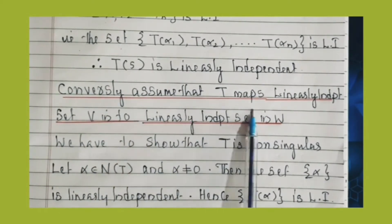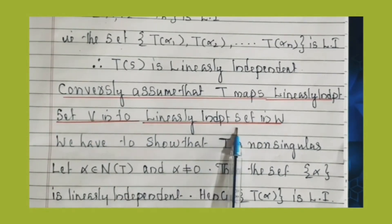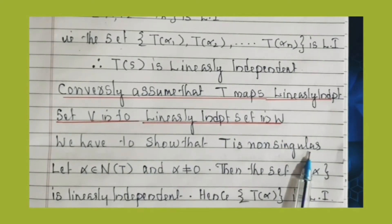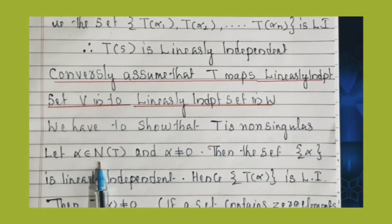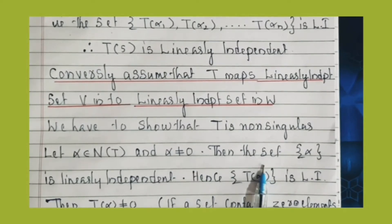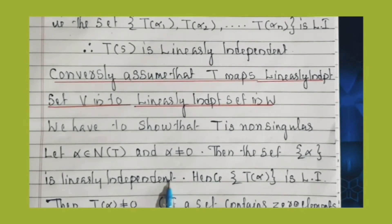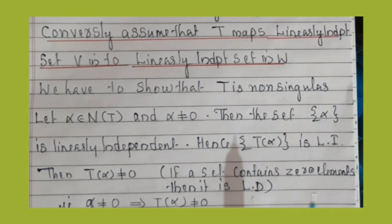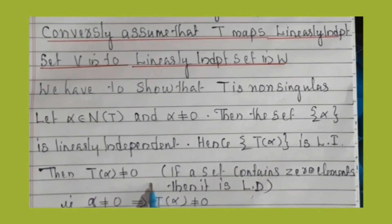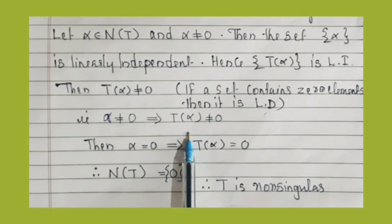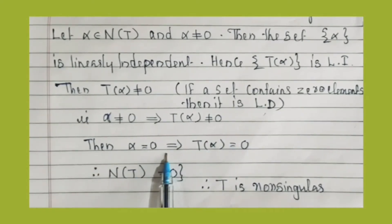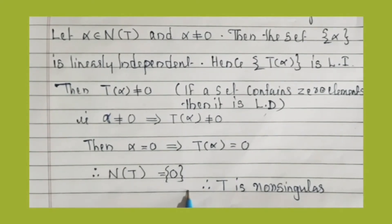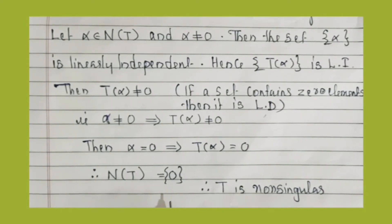Conversely, assume that T maps each linearly independent set in V into a linearly independent set in W. We have to show that T is non-singular. Let α belong to N(T) with α ≠ 0. Then the set {α} is linearly independent. Hence {T(α)} is linearly independent. If a set contains the zero element, then it is linearly dependent. So T(α) ≠ 0. That is, α ≠ 0 implies T(α) ≠ 0, which means α = 0 implies T(α) = 0. Therefore N(T) = {0}, so T is non-singular.